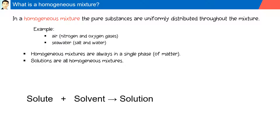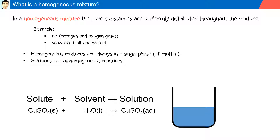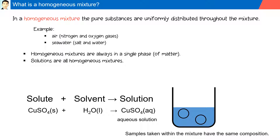A solute plus a solvent forms a solution. In this example, we have copper sulfate (solid) plus water (liquid), which produces copper sulfate aqueous. Whenever the solvent is water, it is known as an aqueous solution. The samples taken within the mixture all have the same composition.